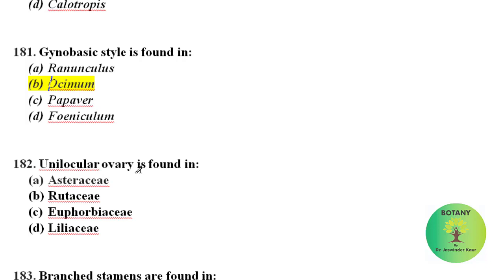Unilocular ovary — meaning a single locular ovary — is found in family Asteraceae.